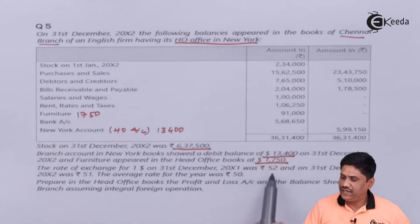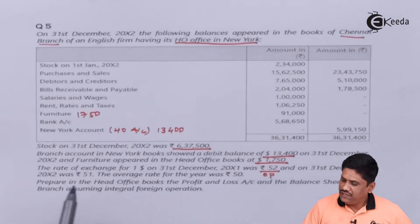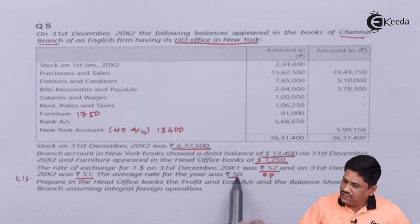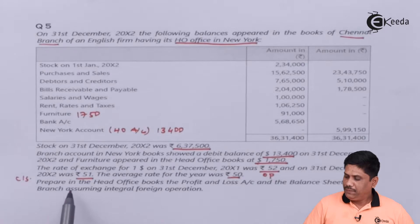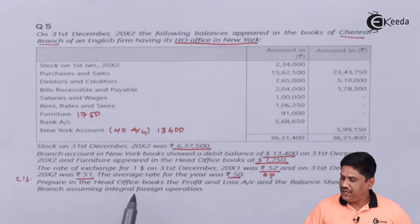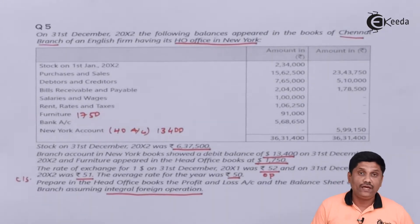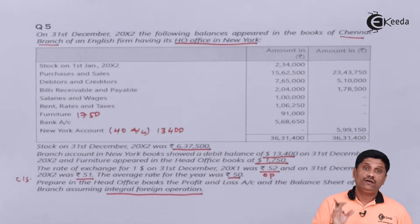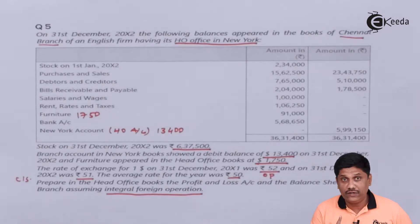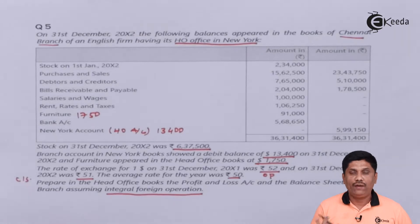The rate of exchange for $1 on 31st December of the previous year (X1) was 52, so that becomes the opening rate for us. On 31st December (X2), the closing rate is 51 and the average rate for the year is 50. So three rates are given. Prepare in the head office book the profit and loss account and balance sheet of the branch assuming integral foreign operation. As a student, you normally convert a foreign branch into Indian rupees, but here for the first time you are converting Indian rupees into dollars.